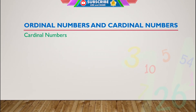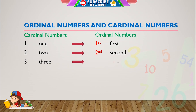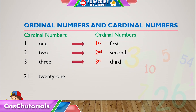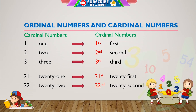The main exceptions from adding '-th' are: 1 becomes first, 2 becomes second, and 3 becomes third. This pattern also applies to larger numbers ending in these, like 21 becomes 21st, 22 becomes 22nd, and 33 becomes 33rd.